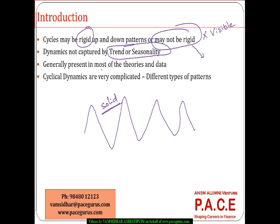A clear-cut definition of cyclicity is: any kind of dynamics present in the data which is not captured by either the trend or seasonality. If there has been a trend, it is captured by trend analysis. If there has been seasonality, it is captured by seasonal dummies and adjustments. Anything not captured by trend and seasonality goes into the cyclicality analysis.